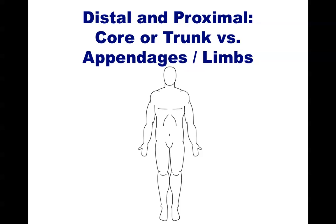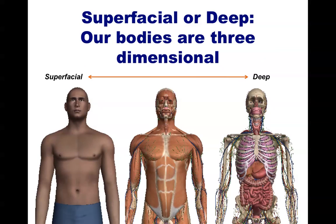Since our bodies are three-dimensional, we also have a term to describe how deep inside. This one's fairly simple: if something is on the surface, it's called superficial, and if something is deep, it is simply called deep. In this case, the skin is superficial to the muscles, and we could say that the muscles are superficial to the internal organs. Or you could describe this going in the other direction, by simply saying that the organs are deeper than the muscle, and the muscle is deeper than the skin.